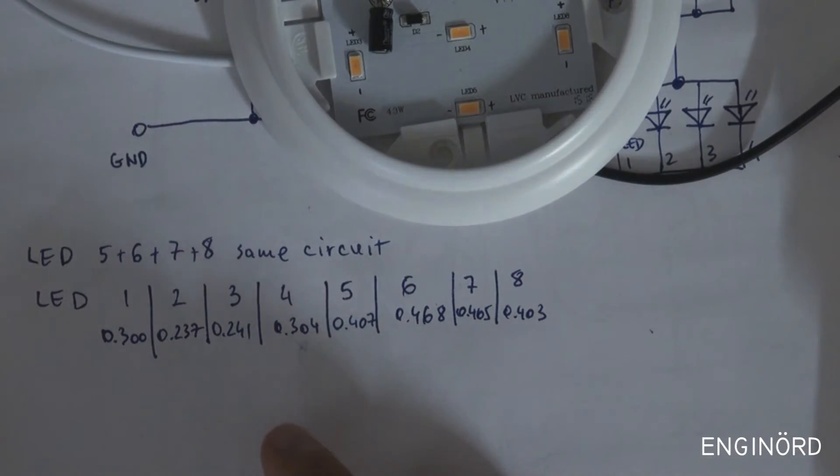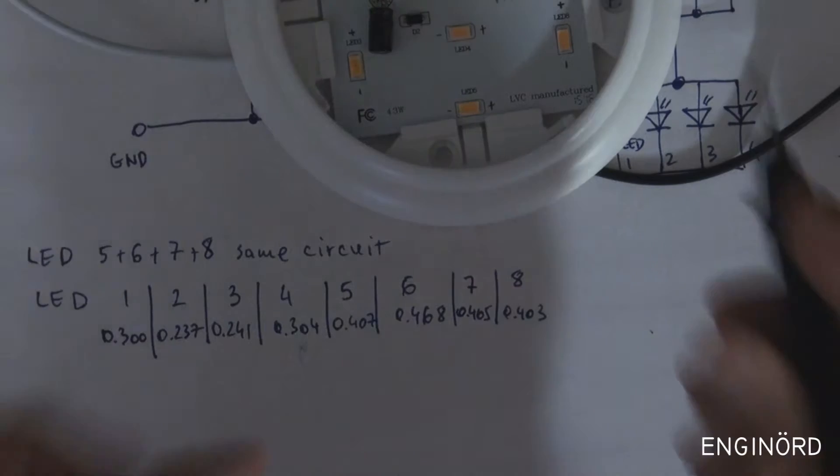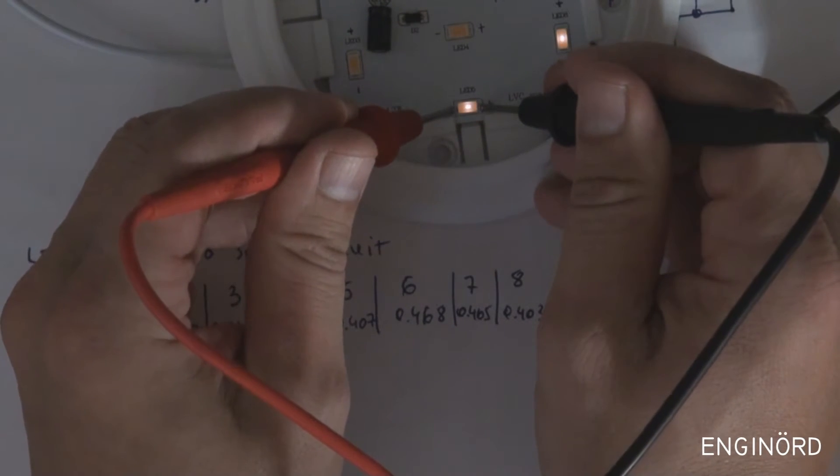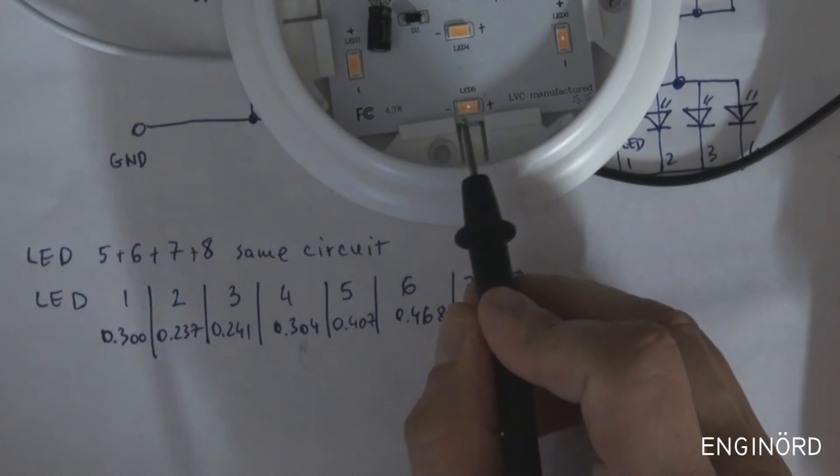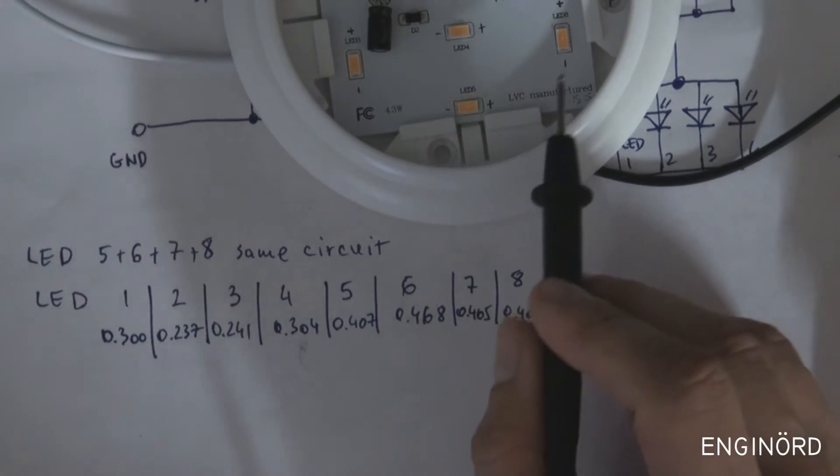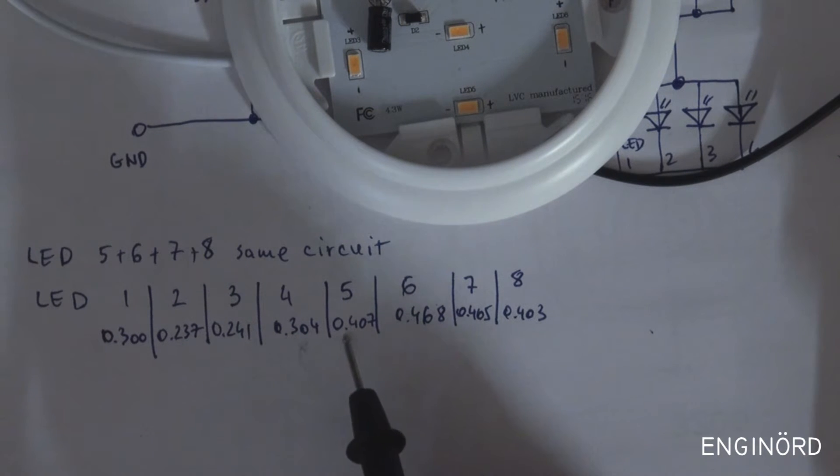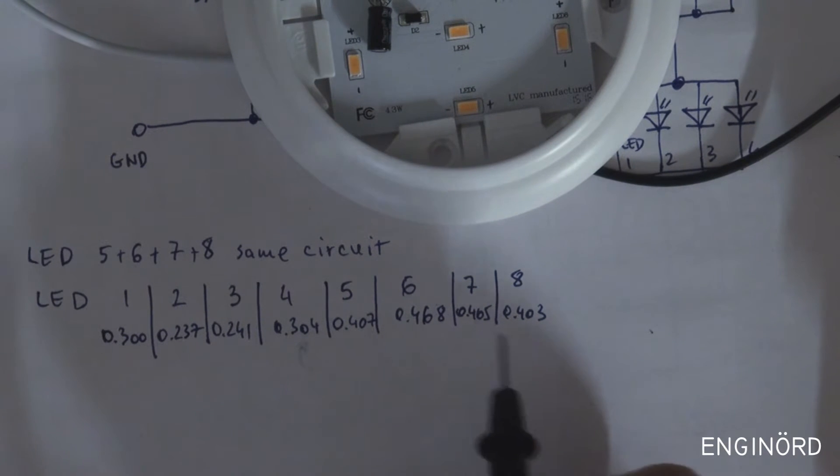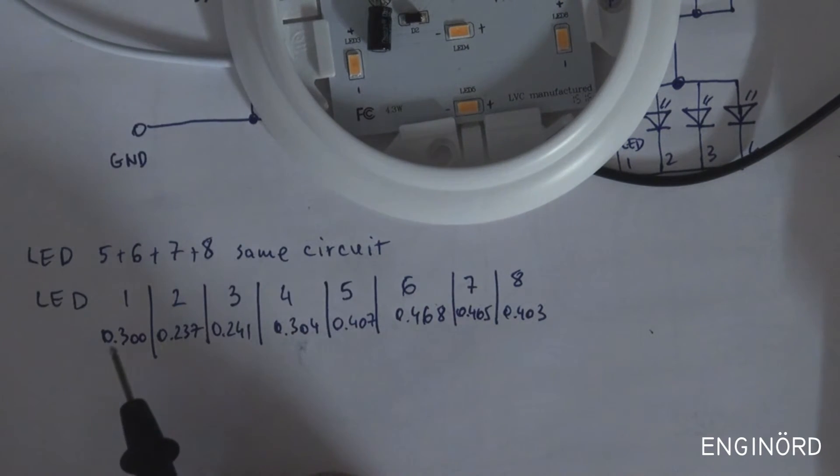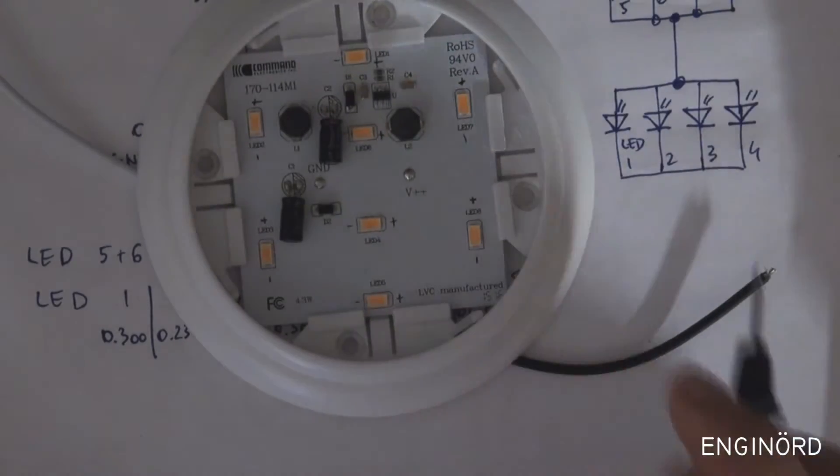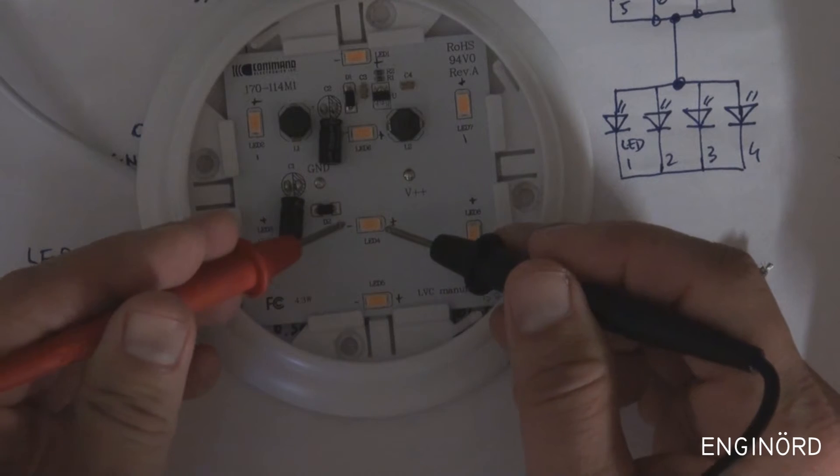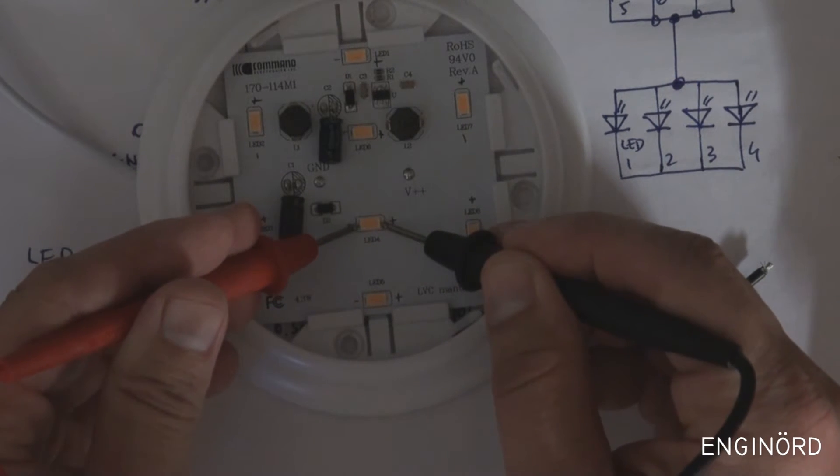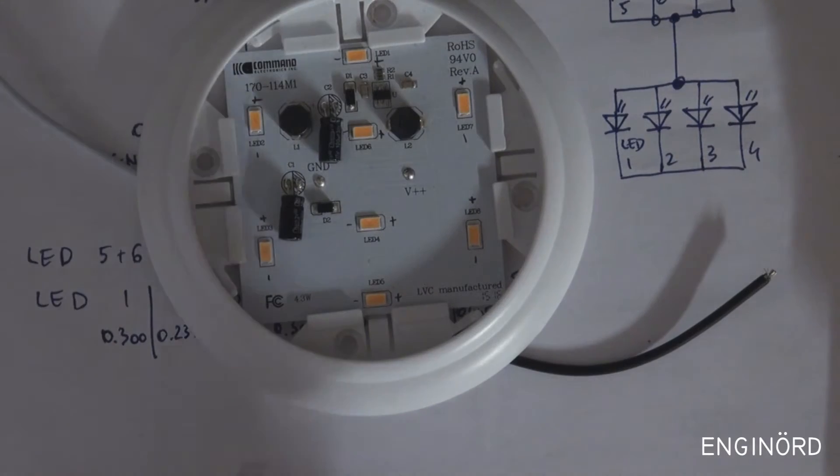And what you can see here is when I touch it so these four will come back alive, so that's five through eight, and you can see the voltages are 0.46, 0.405, 0.403, so these four are working. And then these four are not working and you can see the voltages are much lower, 0.3, 0.30, 0.23, 0.24, 0.30. So these diodes, the four that are not working are blown and they're not going to come back alive that's for sure.